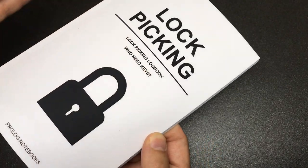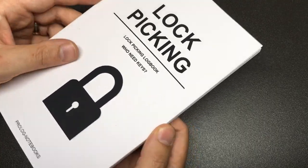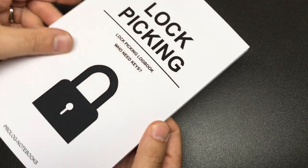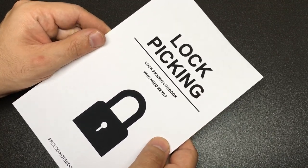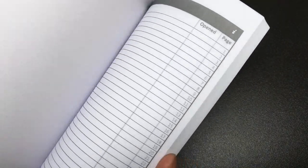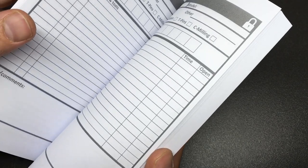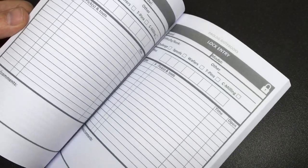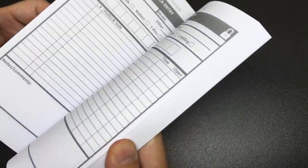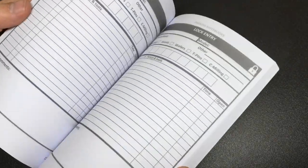The price might change over time but it's currently about 10 pounds of UK money, which is somewhere around 12 US dollars. This is literally an indexed logbook for people who would like to jot down their lock picking entries over time.